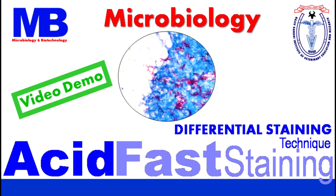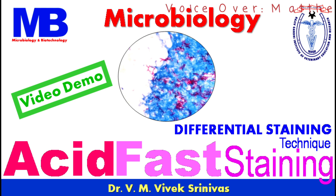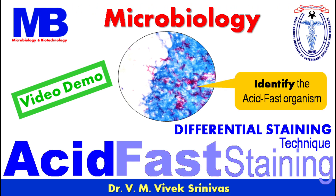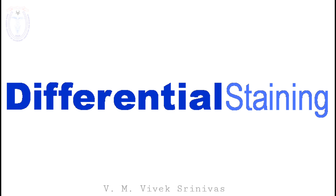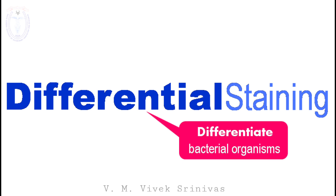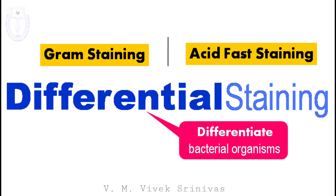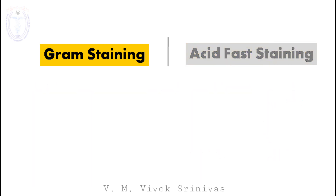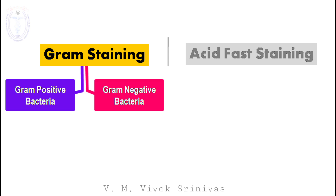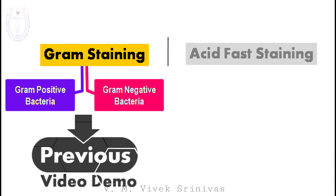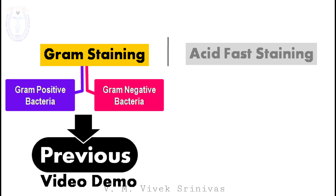In this video demonstration, we will see about a differential bacterial staining technique — the acid fast staining. This protocol is used to differentiate and identify the acid fast bacterial organisms. The gram staining and the acid fast staining are the differential bacterial staining techniques. The gram staining differentiates the bacteria into the gram positive and the gram negative bacteria.